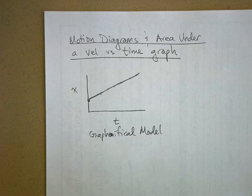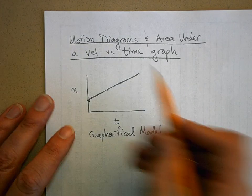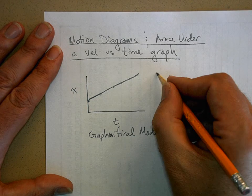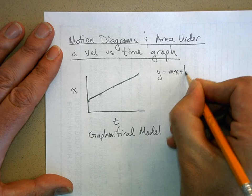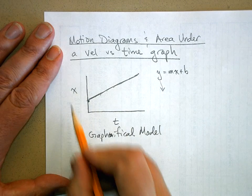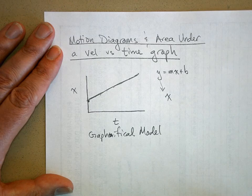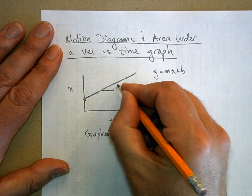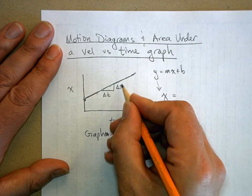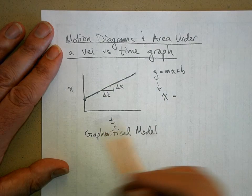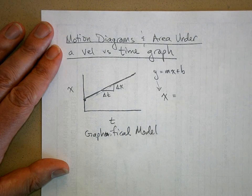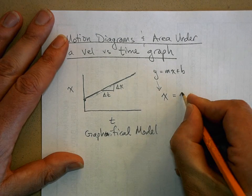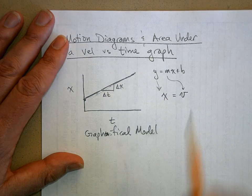We can make this even shorter and represent it with an equation. This is a linear equation — y equals mx plus b — but instead of y we call the vertical axis x for position. The slope is delta x over delta t, which is a constant slope, and by definition that's called velocity.